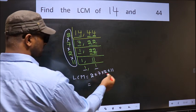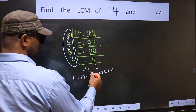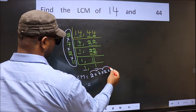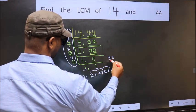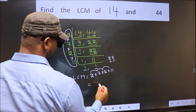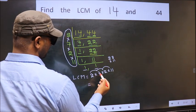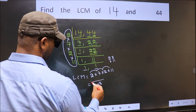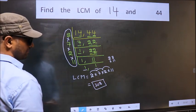So let us multiply these numbers. 2 into 7 is 14, into 2 is 28, into 11. 11 into 8 is 88. 8, 2, 11 into 22 plus 8 is 30. So 308 is our LCM.